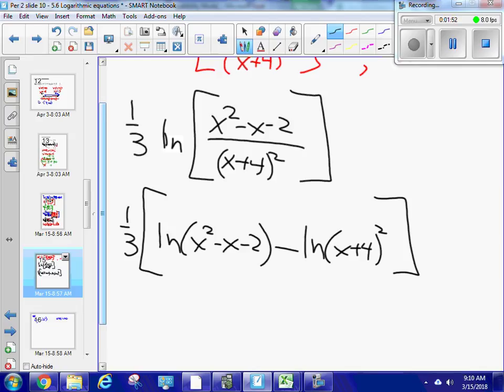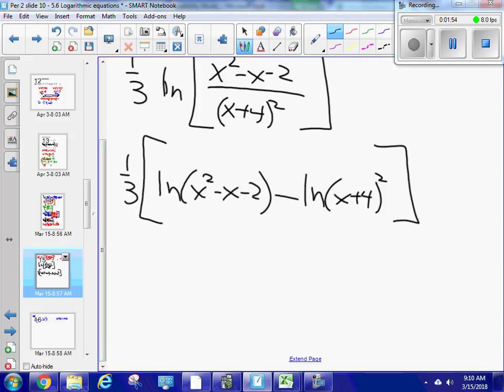I'm getting close to the end here, I think. So I'm going to have one-third ln x squared minus x minus 2 minus 2. I need to expand it all the way, and I've got a power there. So 2 ln x plus 4.